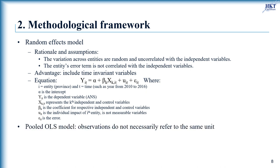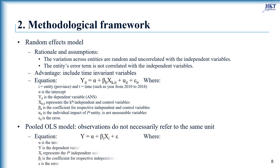The pooled OLS model is the linear regression. Pooled data occur when we have a time series of cross-sections, but observations in each cross-section do not necessarily refer to the same unit. In panel data, pooled OLS can derive unbiased and consistent estimates even when time-constant attributes are present, but random effects will be more efficient. Fixed effects is a feasible generalized least squares technique, asymptotically more efficient than pooled OLS when time-constant attributes are present. Random effects adjusts for serial correlation induced by unobserved time-constant attributes.